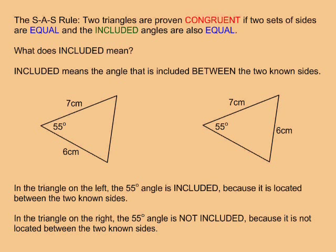The SAS rule states that two triangles are proven congruent if two sets of sides are equal and the included angles are also equal. But what does included mean? Included means the angle is included between the two known sides.